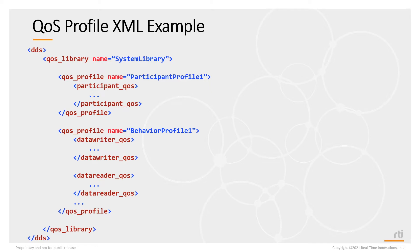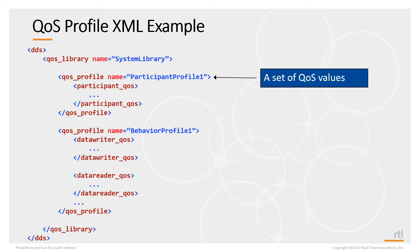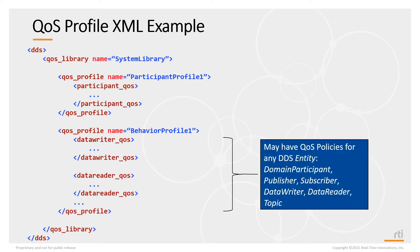Here's an example of QoS profiles defined in XML. Within the DDS tag you'll have a QoS library, and a QoS library contains the definition of one or more QoS profiles. A QoS profile will contain the definition of QoS policies for one or more DDS entities. Commonly, you'll find QoS profiles that define the participant QoS, or profiles that affect end-to-end behavior by containing QoS for both data writers and data readers.